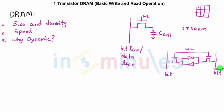So the density is quite high. Density means more number of similar cells on a given area. Because SRAM uses six transistors, it will be less dense compared to a DRAM.